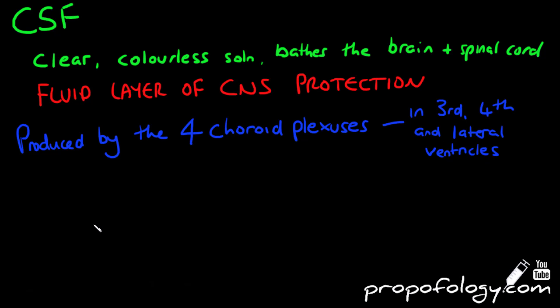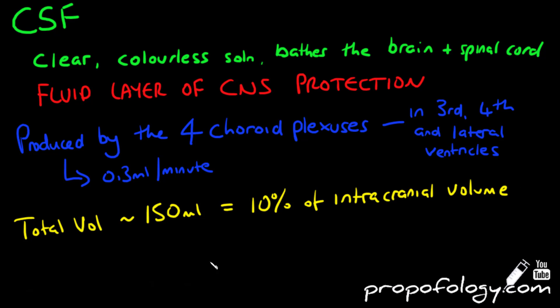CSF is produced at a rate of approximately 0.3 mils per minute, and the total volume of CSF is approximately 150 mils. That equates to approximately 10% of your intracranial volume, or the volume inside your skull.